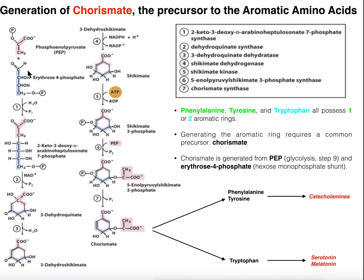We have two major precursors for Charismate. One is phosphoenolpyruvate and the other is erythrose-4-phosphate. Phosphoenolpyruvate is the ninth substrate in glycolysis — this is what gets converted into pyruvate by the action of pyruvate kinase, and it's also formed from enolase, the glycolytic enzyme. So this is going to have to be siphoned out of glycolysis. Erythrose-4-phosphate is actually an intermediate in the pentose phosphate pathway, also called the hexamonophosphate shunt. Both of these processes occur in the cytoplasm.